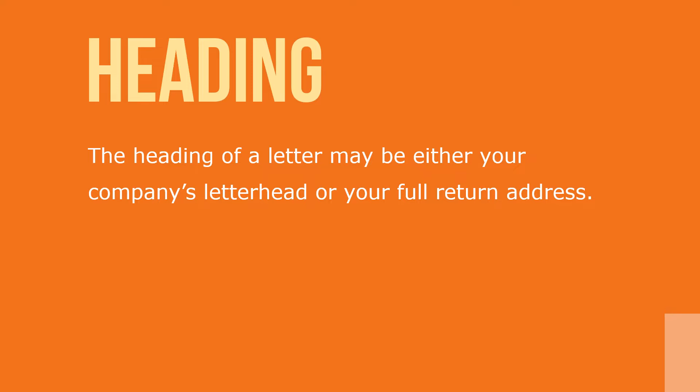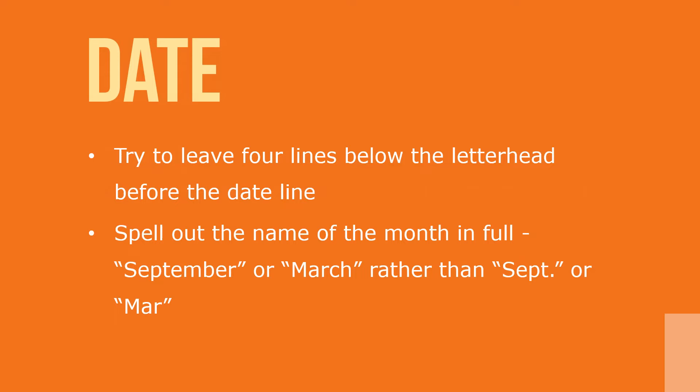The heading of the letter will be either your company's letterhead or your full return address. Next is the dateline. Try to leave four lines below the letterhead before the dateline. Spell out the name of the full month, like September or March, rather than an abbreviation. The dateline is usually keyboarded as: November 11, 2016.